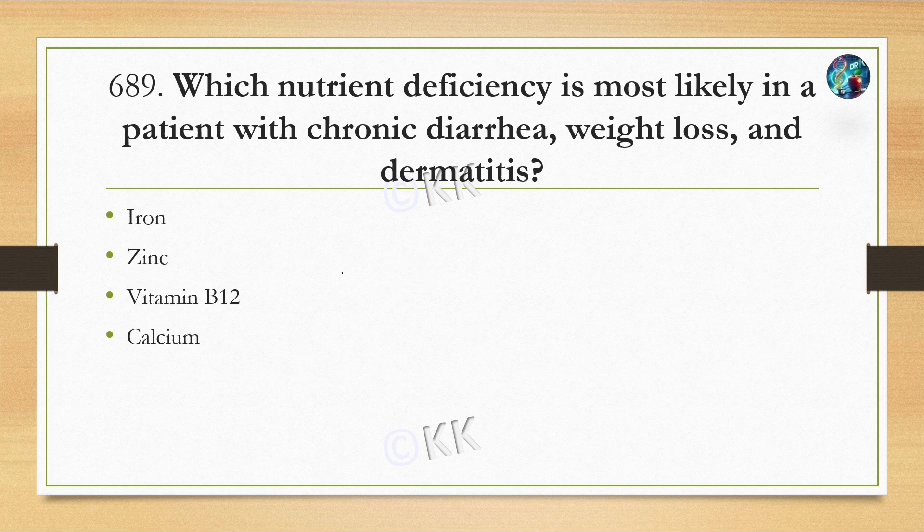Next question: which nutrient deficiency is most likely in a patient with chronic diarrhea, weight loss, and dermatitis? Option A: iron. Option B: zinc. Option C: B12. Option D: calcium.